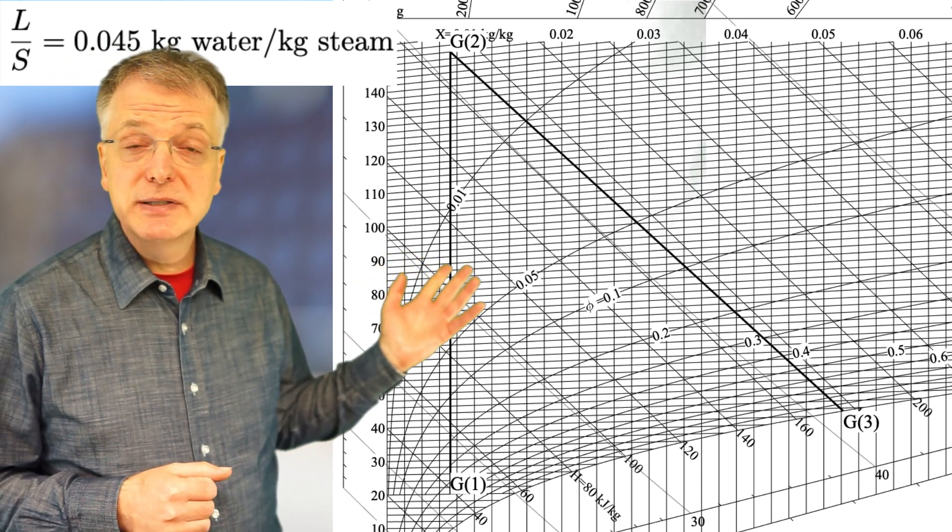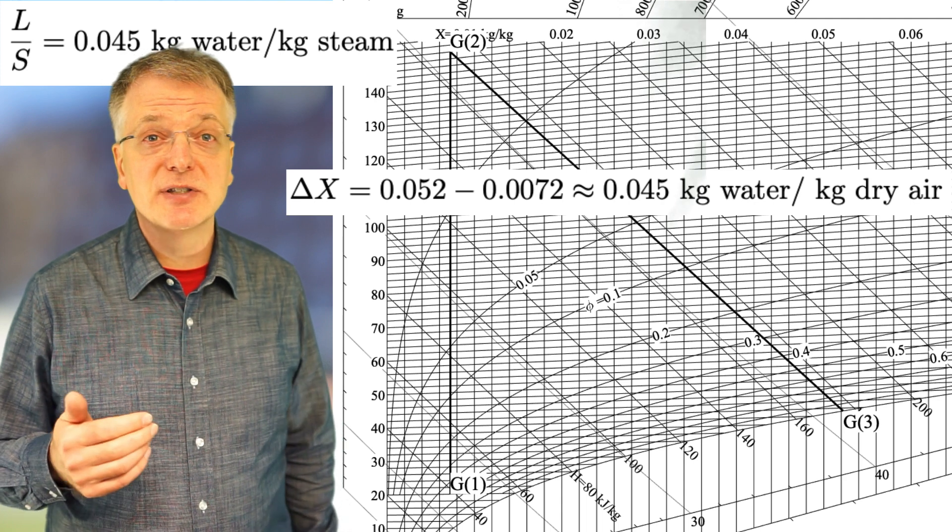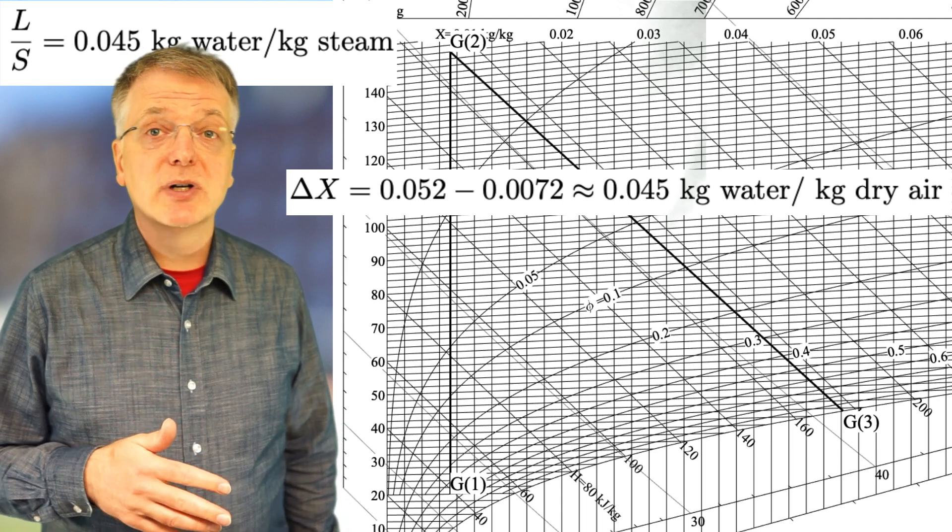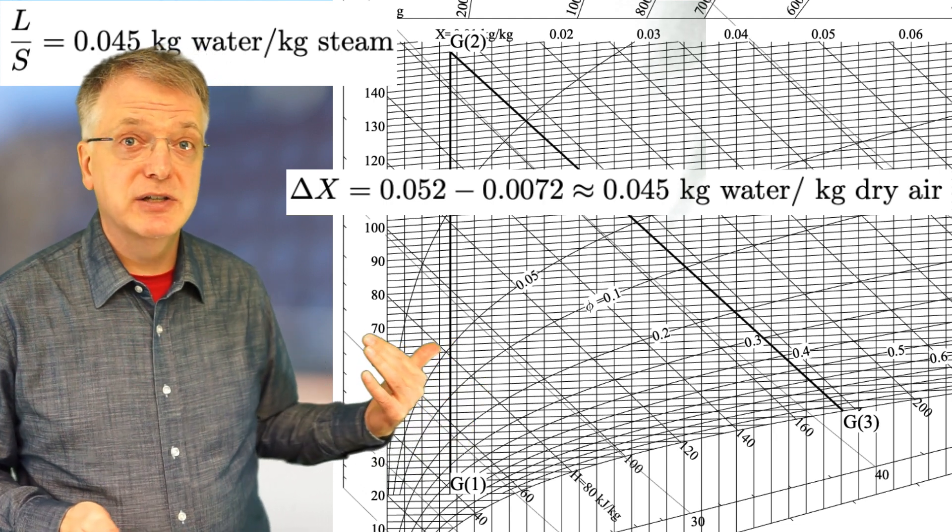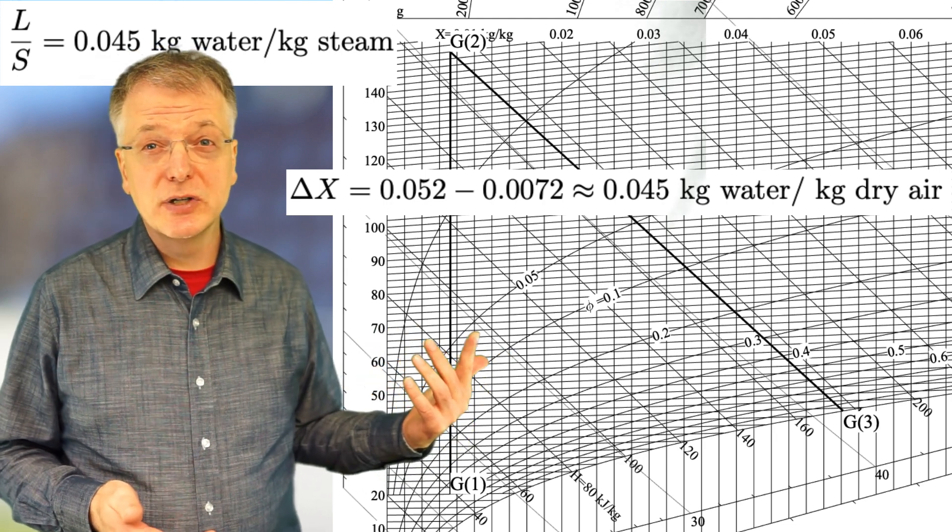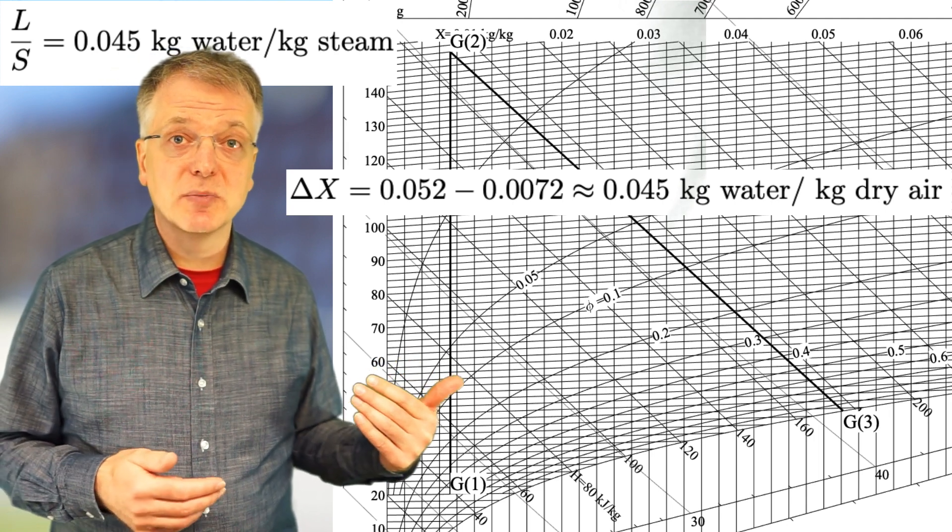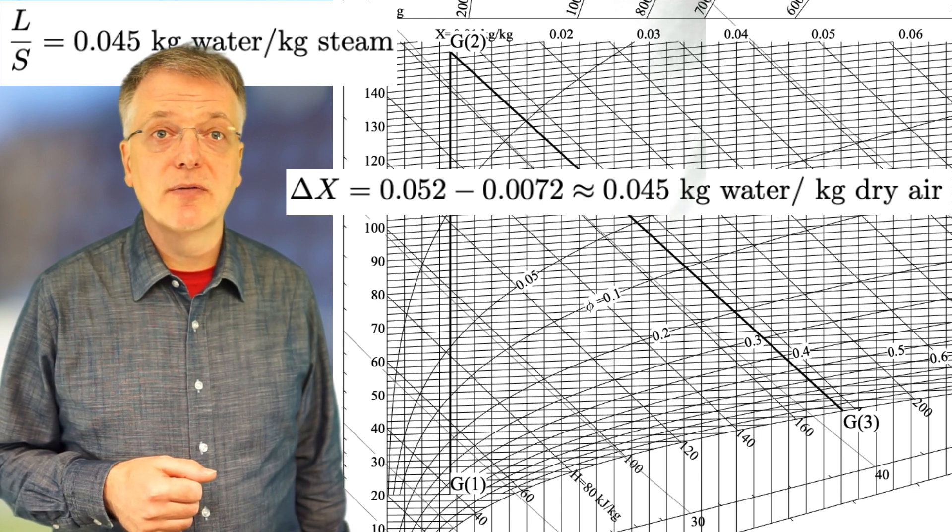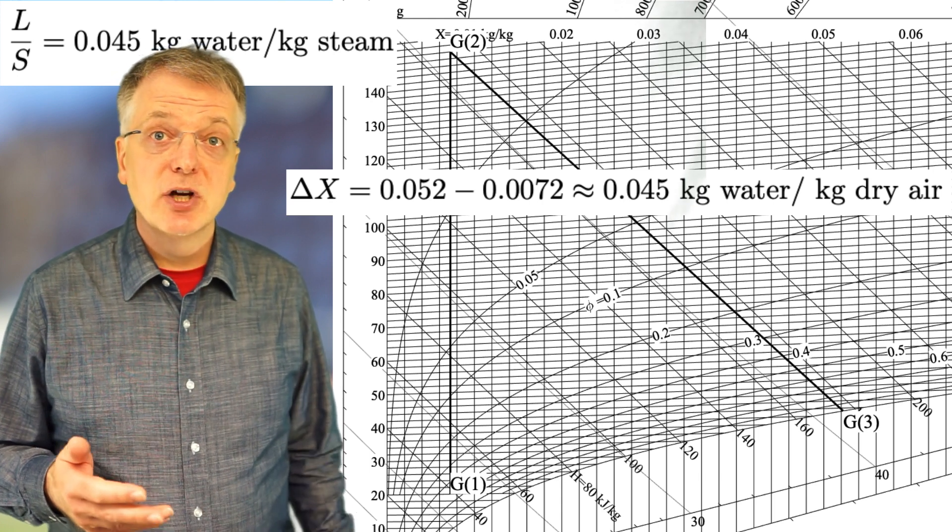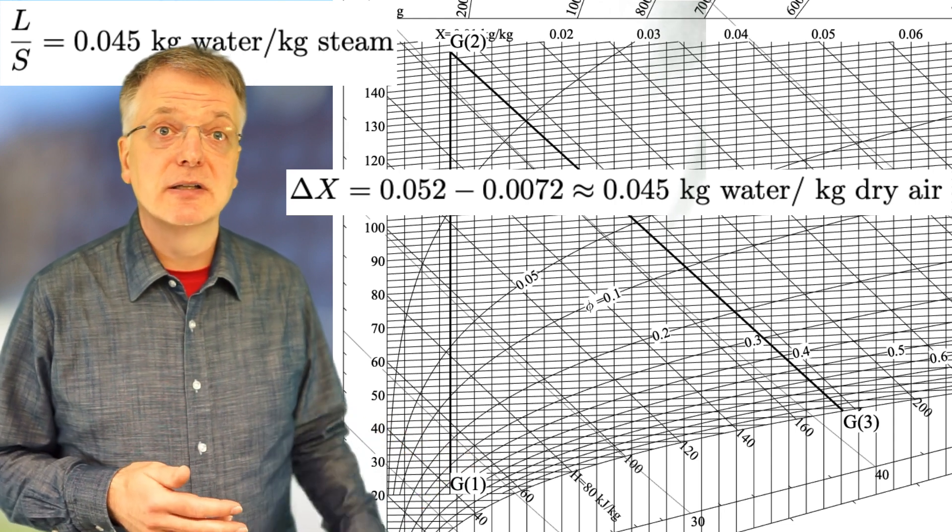Looking at the Mollier diagram, we see that the water content in the air goes from 0.0072 kg of water per kg of dry air to around 0.052, which gives us a change in air water content of 0.052 minus 0.0072, which is approximately 0.045 kg of water per kg of dry air. Thus, approximately the same volume of air is needed as the volume of steam needed.